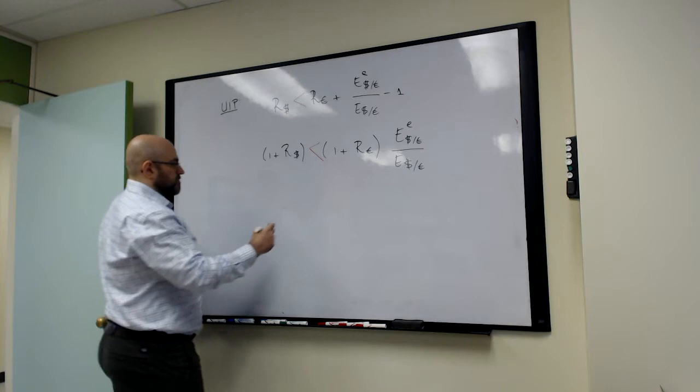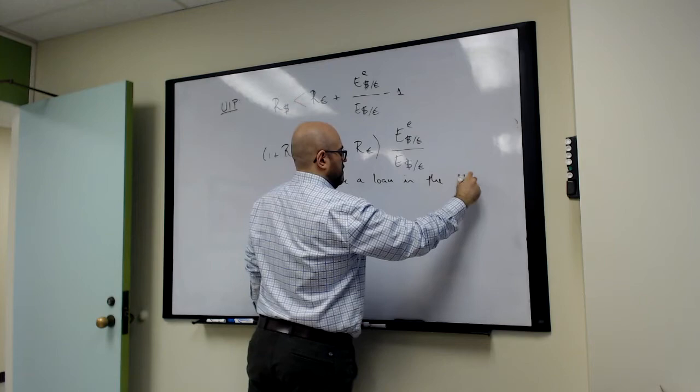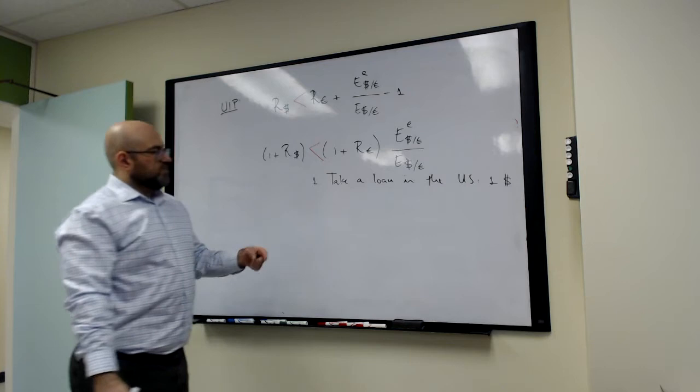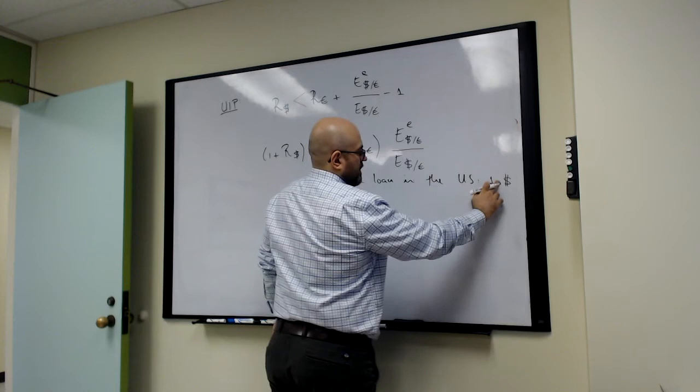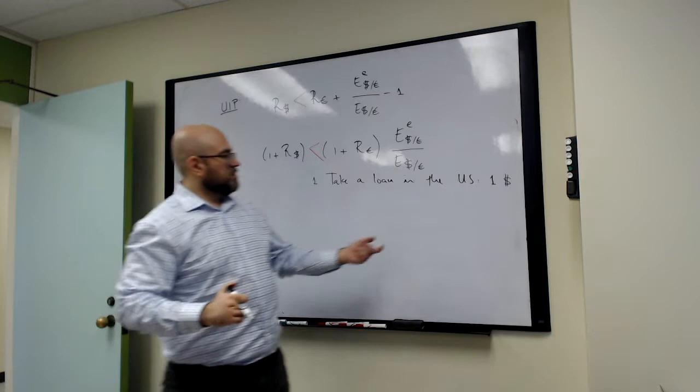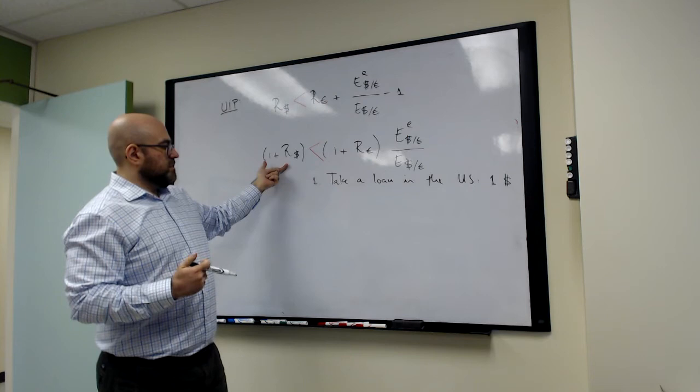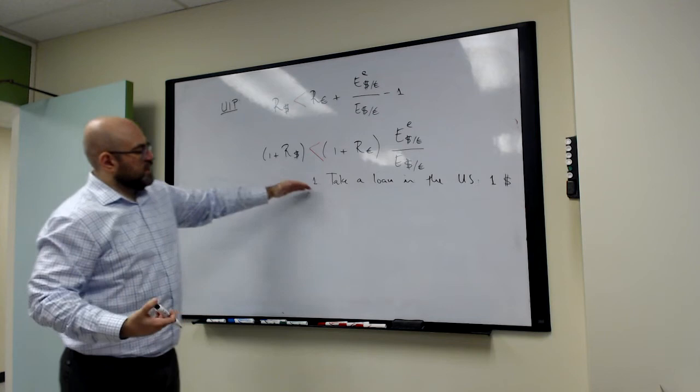First, we will take a loan in the US. So we take a one dollar loan in the US. The size of the loan will not matter because you should be able to scale this up or down. As long as prices don't change, you should be able to arbitrage this interest rate differential. So we will start with a one dollar loan in the US, and we promise to pay 1 plus R_dollar in one year's time. At the end of this process, we're going to pay back this loan in one year's time.